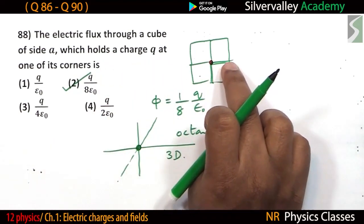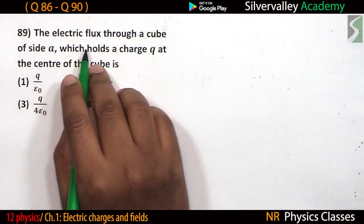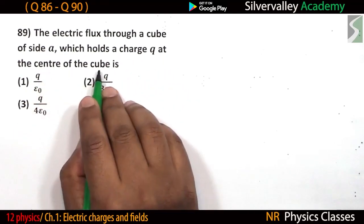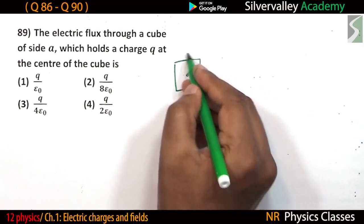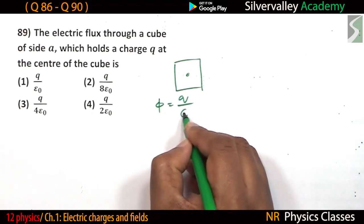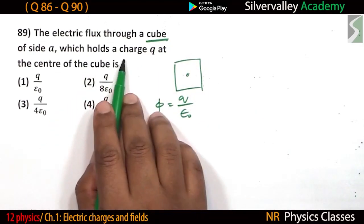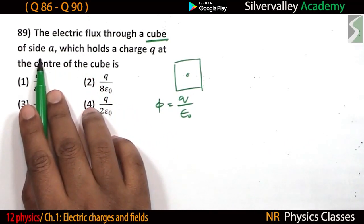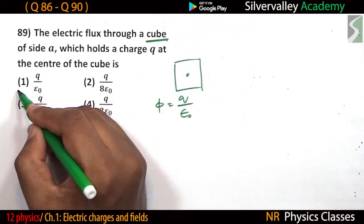If a charge Q is at the centre of a cube, flux through the entire cube equals Q divided by epsilon naught by Gauss's law — the shape doesn't matter. If the question asks for flux through the whole cube, the answer is Q over epsilon naught. Note: cube has 6 faces, but if the question asks for flux through the cube (not each face), the answer is simply Q by epsilon naught.